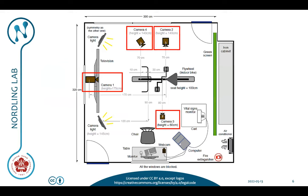Here you can see our experiment setup. We have the exercise bike in the center and then it's surrounded by four different cameras that we use for recording, and then we have lights that we use for changing the illumination level. We also have a TV screen where we show instructions to the person doing the experiment and a green screen behind the person.